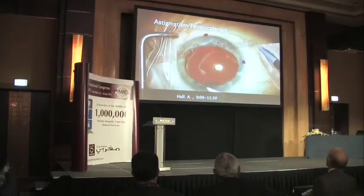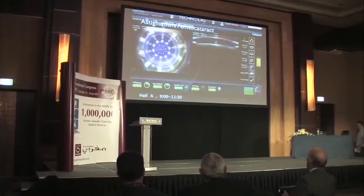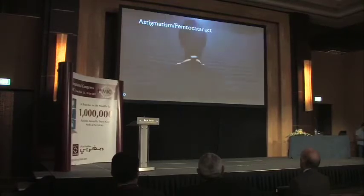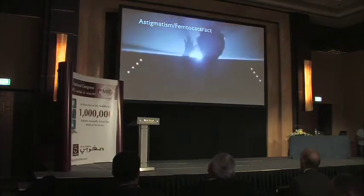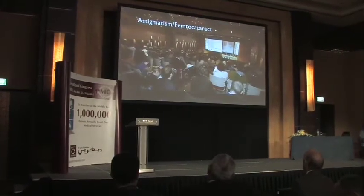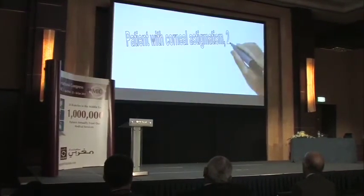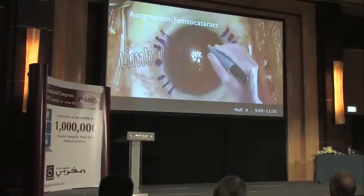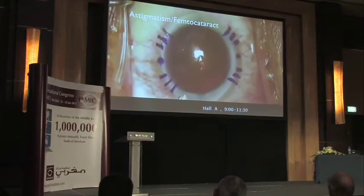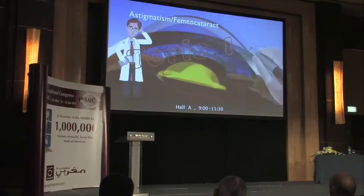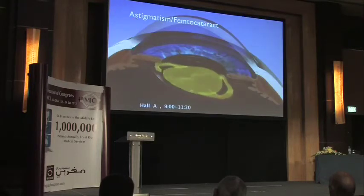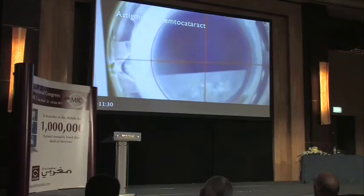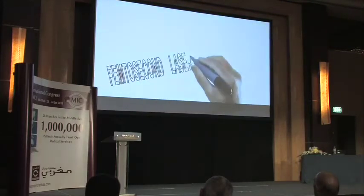During cataract surgery — do not miss the upcoming informative session in Hall A where our anterior segment experts will be discussing a patient with corneal astigmatism of 2.5 prism diopters and plans for cataract surgery. How would you manage this patient? Would you do limbal relaxing incisions, implant toric intraocular lenses, or schedule him for LASIK astigmatic correction post-cataract surgery? Femtosecond laser-assisted cataract surgery.